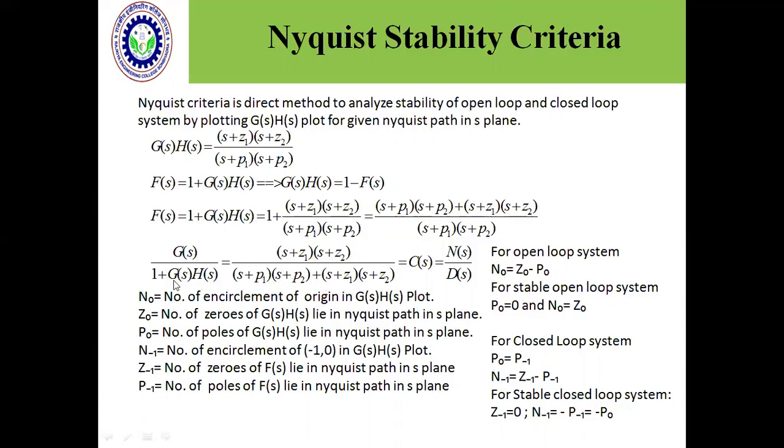Here, an important thing happens: how many poles or how many zeroes are in the right half of s plane? Why? Because the zeroes of 1 plus G(s)H(s) will now define stability, because those zeroes are called a characteristic equation for closed loop system.